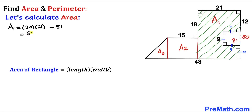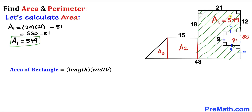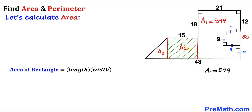Simplifying: 30 times 21 gives us 630, minus 81, which equals 549 square units. Thus the area A₁ turns out to be 549 square units.